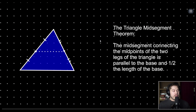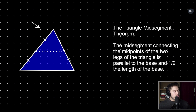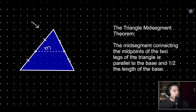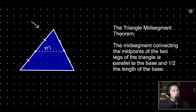The triangle mid-segment theorem states that the mid-segment connecting the midpoints of the two legs of the triangle is both parallel to the base and one half the length of the base. Here in our picture we have our triangle and this dotted line is our mid-segment, connecting the two midpoints of our triangle. To prove this theorem we need to prove that the mid-segment is parallel to the base and that it is one half the length of the base.